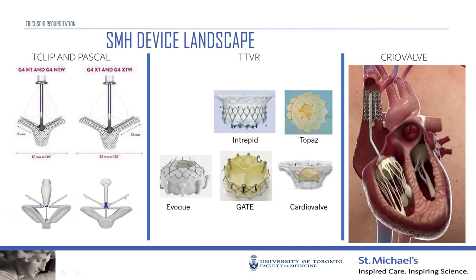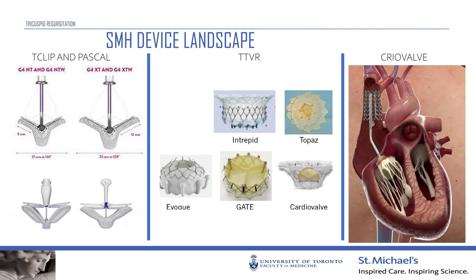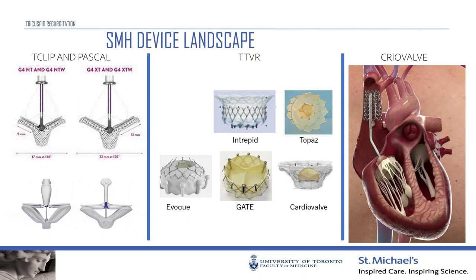At St. Michael's we have the biggest transcatheter tricuspid valve program in Canada and have access to different devices. We gain access by attending meetings, meeting sponsors, reviewing data, and speaking with colleagues at US sites enrolled in trials. Once we identify a beneficial device, we go through Health Canada for approval and it becomes part of a research study. That's why we're very mindful of the timing of echo studies — each device sponsor has strict criteria and requires the most recent imaging data.